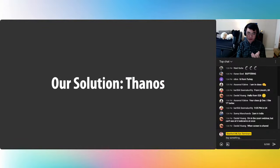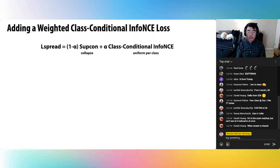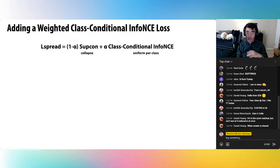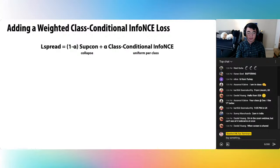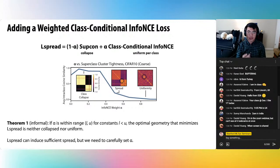Our approach consists of two components that individually address the two challenges. The first component is a loss function we call L-spread: a weighted sum of the supervised contrastive loss term and a class-conditional info-NCE loss. A class-conditional info-NCE loss is an info-NCE loss that only operates on individual classes — it spreads out only the cats, or the dogs, separately. The supcon term tries to create class collapse, while the class-conditional info-NCE tries to create uniformity. We showed there exists a range of weights that avoids both collapsed and uniform geometries, giving a representation that obtains the best of both.